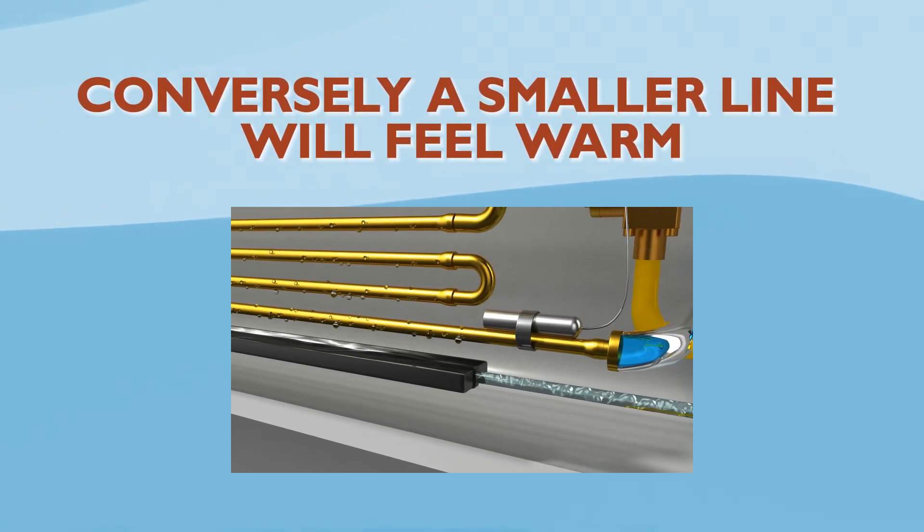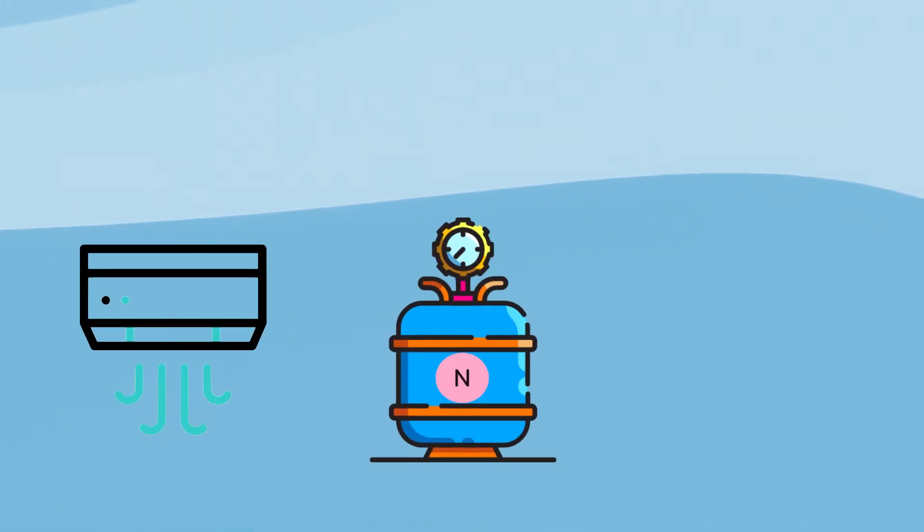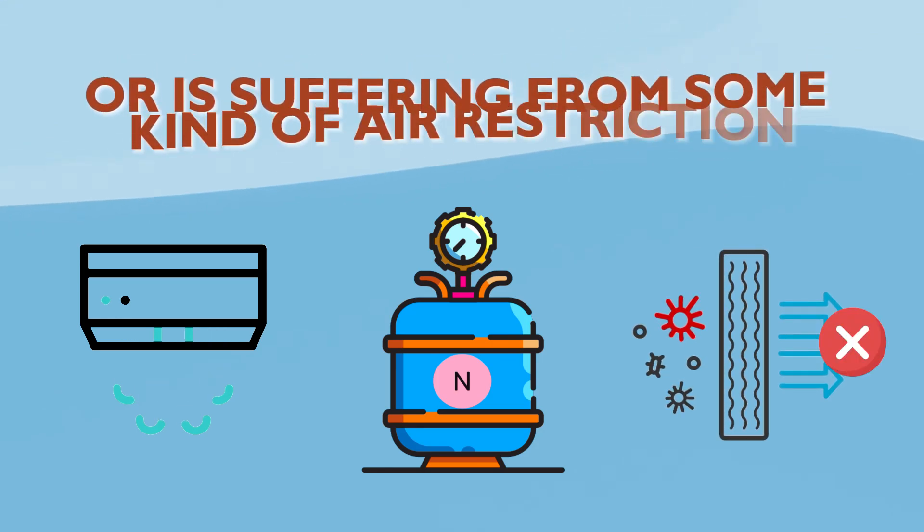Conversely, a smaller line will feel warm while the air conditioner is running. However, if you see ice on the lines, you likely have a system that is low on refrigerant or is suffering from some kind of air restriction.